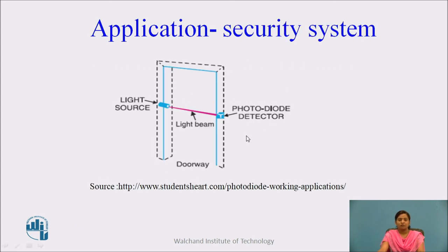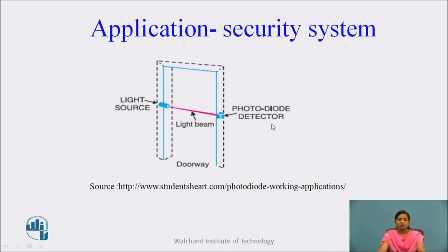Another application of photodiode is in security or alarm systems. A light source is placed on one side of a doorway and a photodiode detector on the other side. The reverse current through the photodiode is maximum as long as the light source focuses on it. Whenever a person passes through the doorway, the light beam is interrupted, the current becomes zero, and the alarm is triggered.